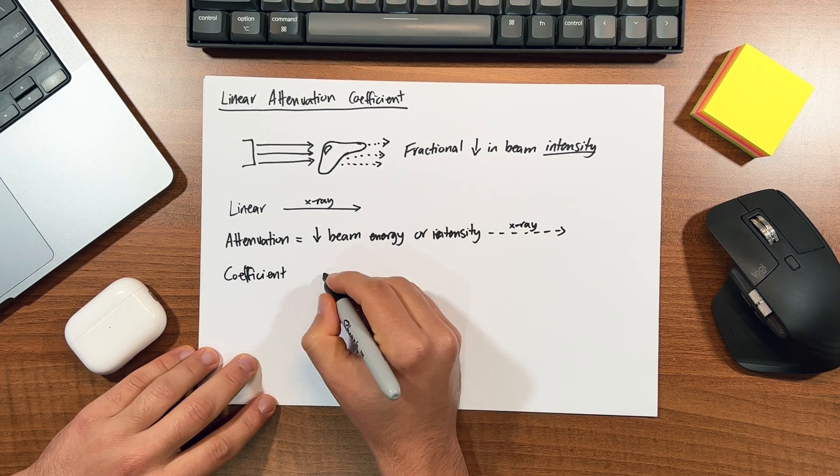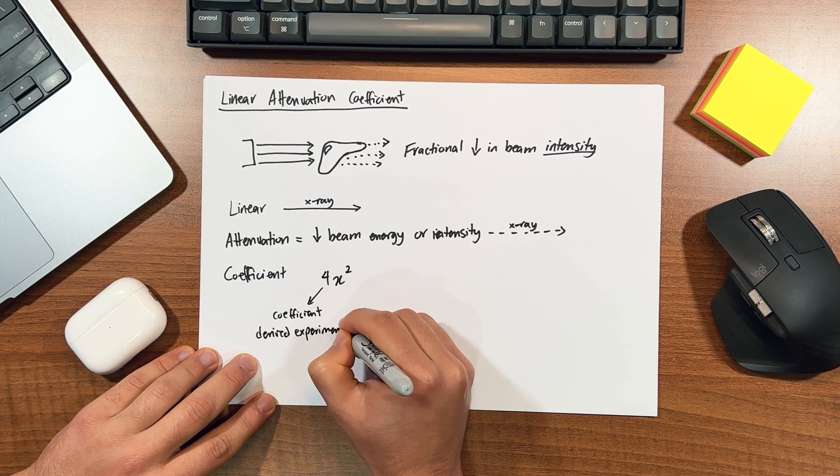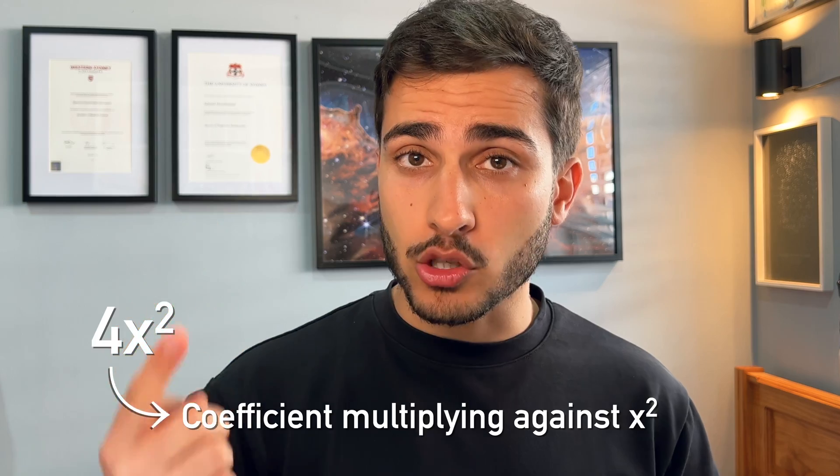And lastly we have the word coefficient, which you may have heard of in high school maths. It's simply a number or constant that's derived experimentally that our value of interest is multiplied by. So for example, if we have 4x squared, the 4 is the coefficient that's multiplying against x squared.